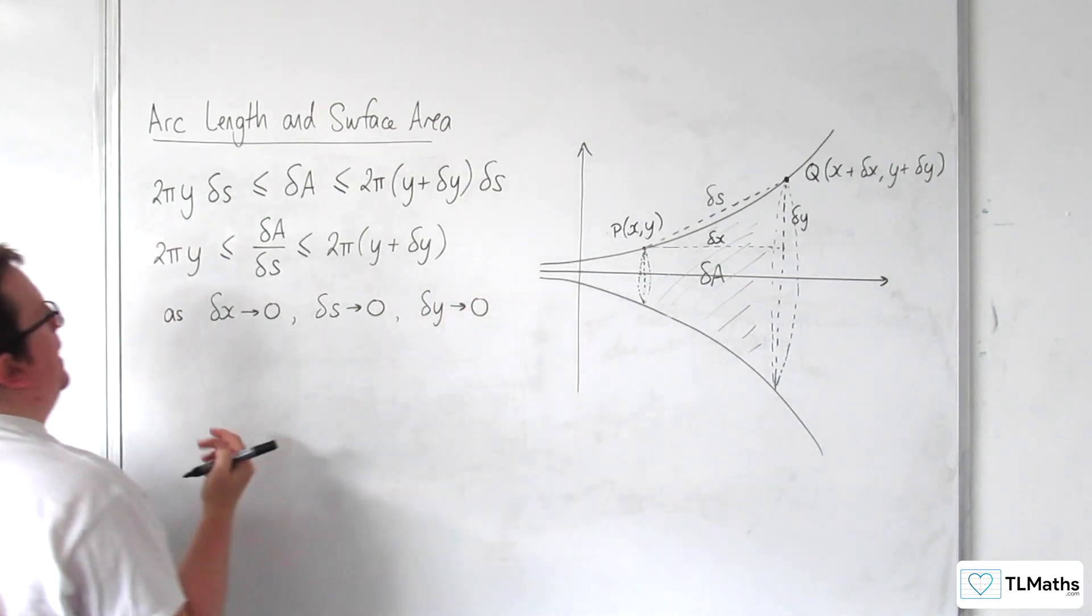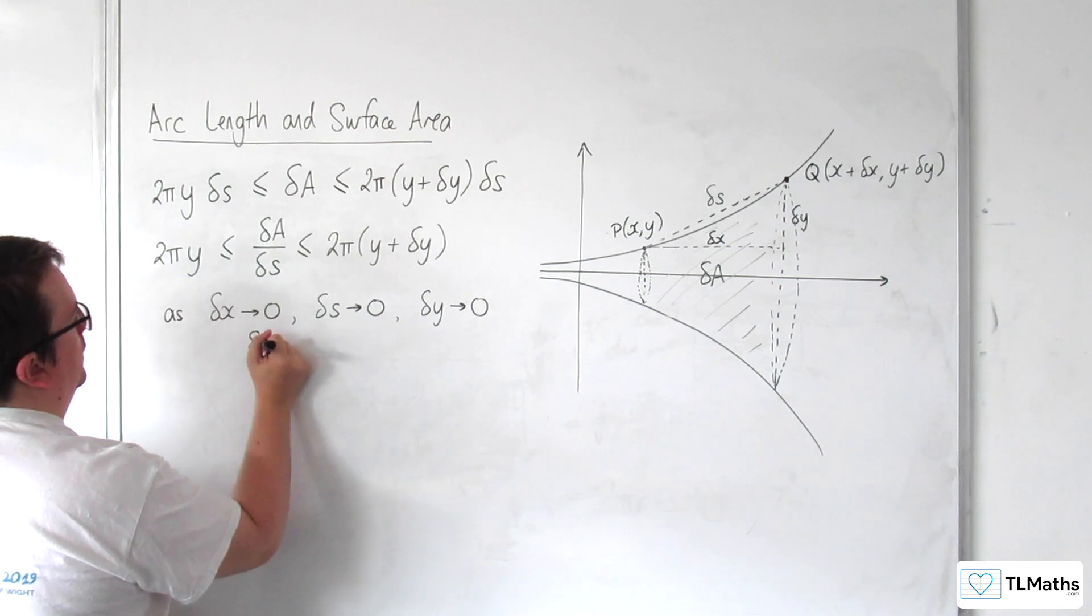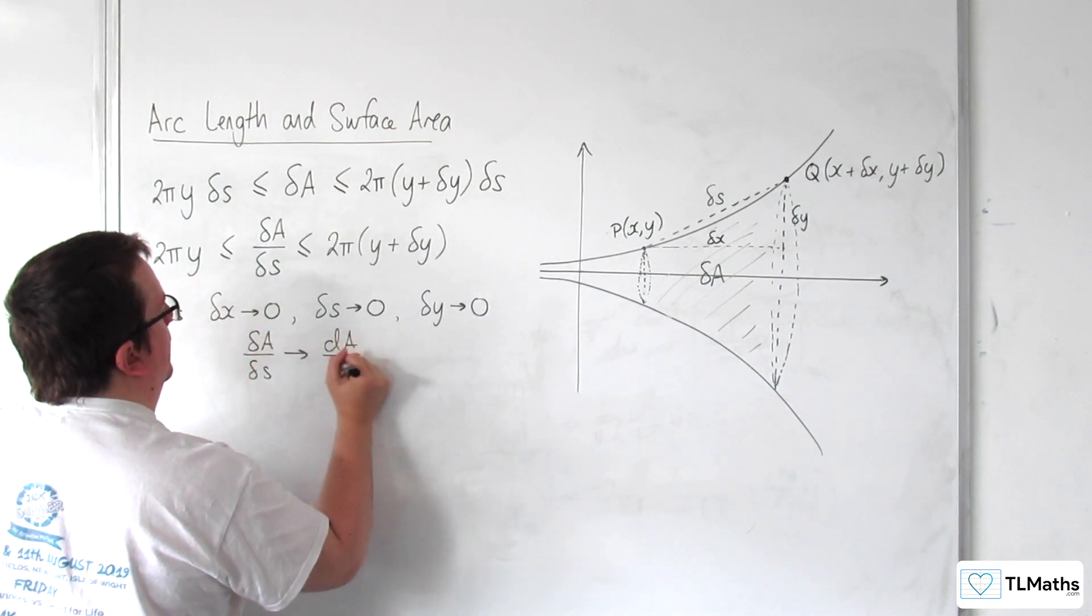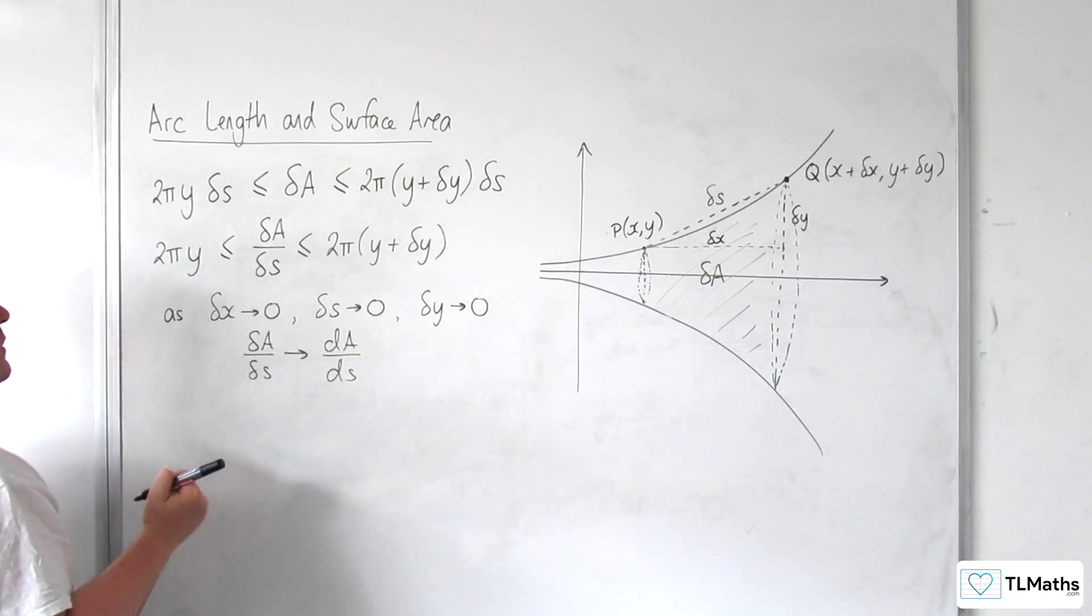And what we had was that delta A over delta S would tend to dA over dS.